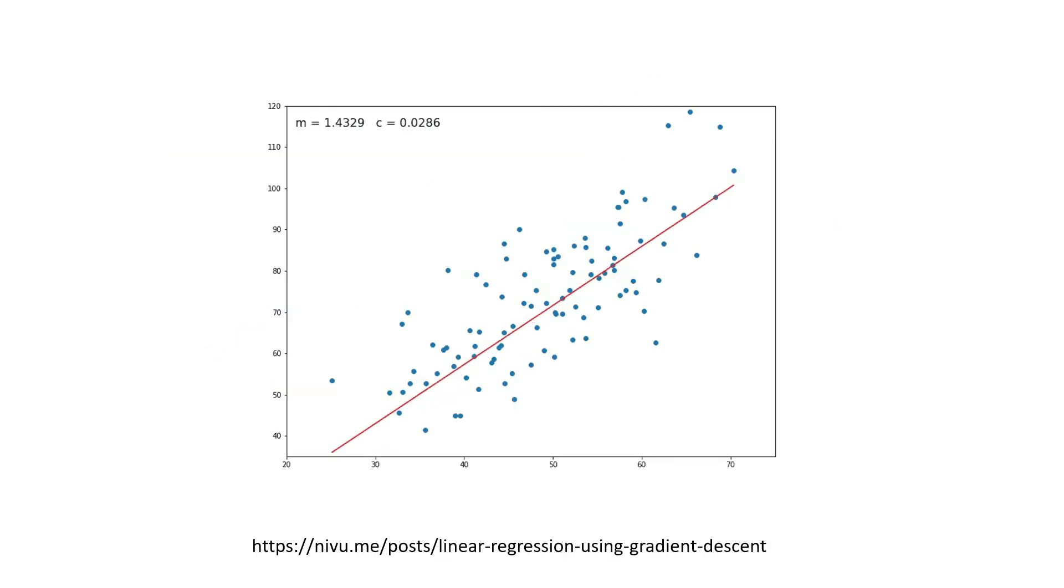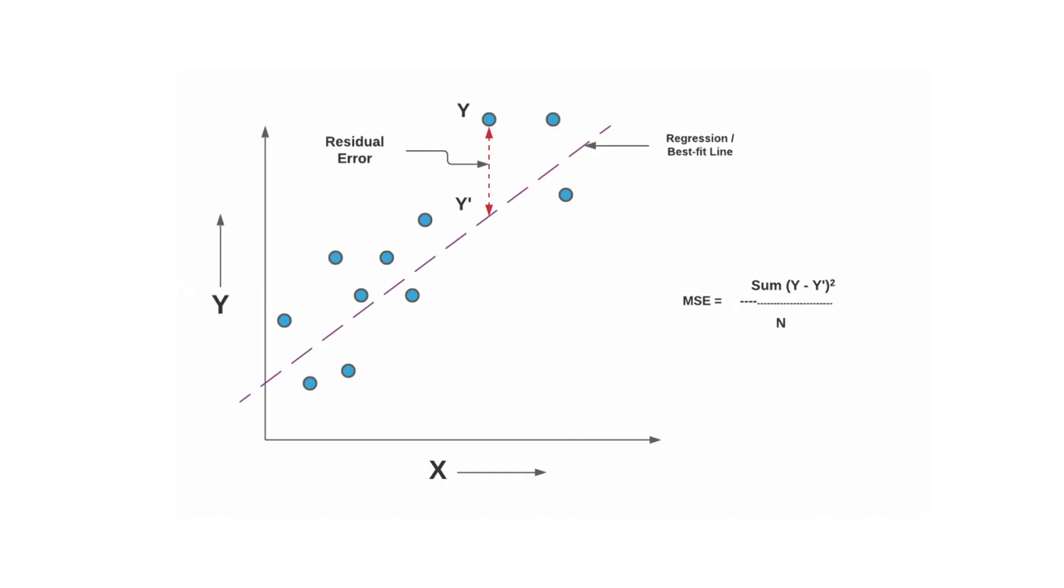The core of the linear regression algorithm is we have to keep changing m and c until we find the best fitting line. How do you know that the line is the best fitting line?